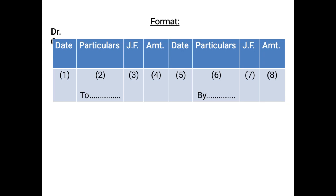One very important rule to remember: whatever we post on the debit side of the ledger account starts with the word TO, and whatever we post on the credit side of a ledger account starts with the word BY. If you do not write this, your marks will be deducted. So repeating again: whatever is posted on the debit side starts with TO, and whatever is posted on the credit side starts with BY.